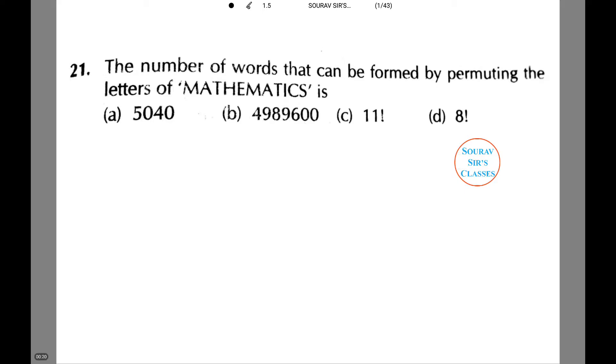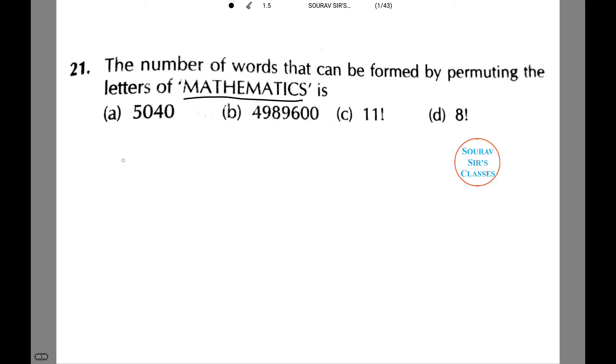In the first question we are given the word mathematics. We need to find the number of words that can be formed by permutating these letters of mathematics. The given word is mathematics, therefore total number of alphabets are 11.